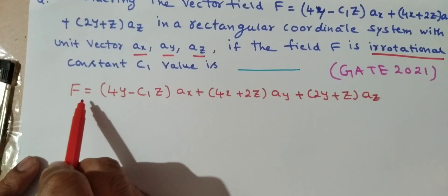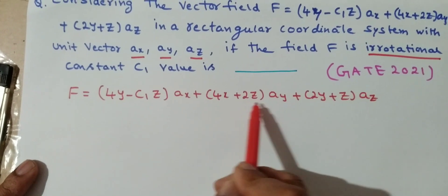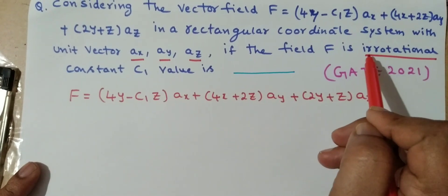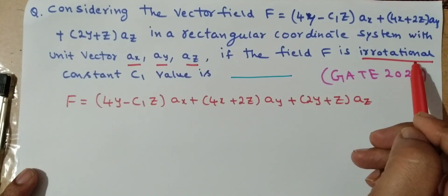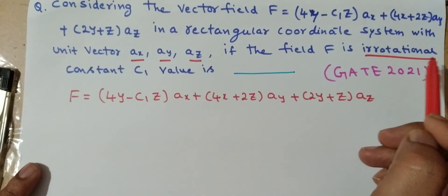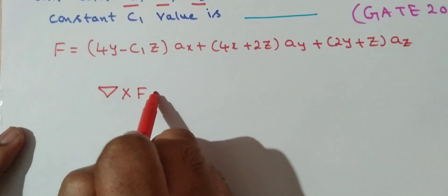Here, F = (4y - c1·z)ax + (4x + 2z)ay + (2y + z)az. If F is irrotational, it means the curl of the vector is equal to 0. Therefore, we have to find the curl and equate it to 0.